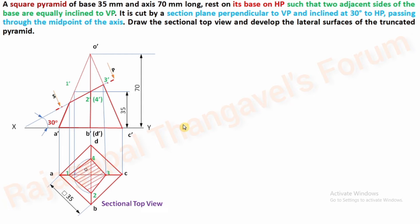Now for radial line development, the first step is to check whether any of the slant edges is parallel to XY. Yes — here we have OA as well as OC; two slant edges are parallel to XY, and one is more than sufficient. So we can take the true length of the slant edge straight away from O'C' or O'A'.